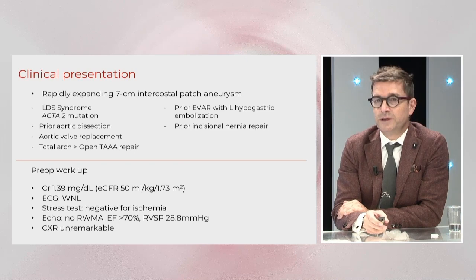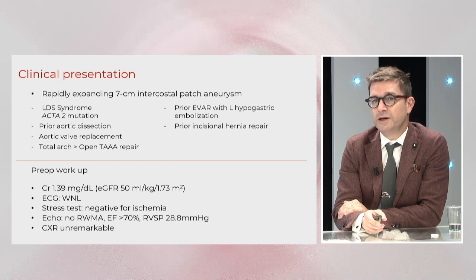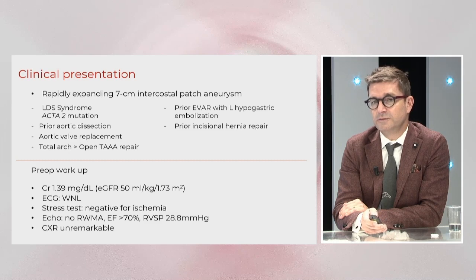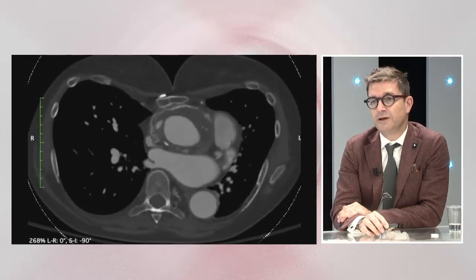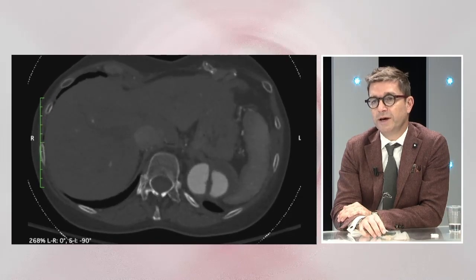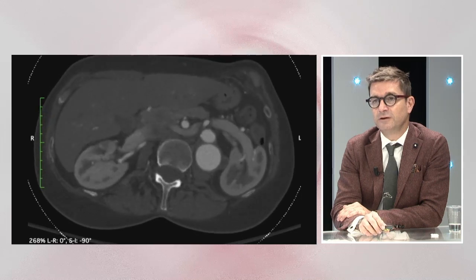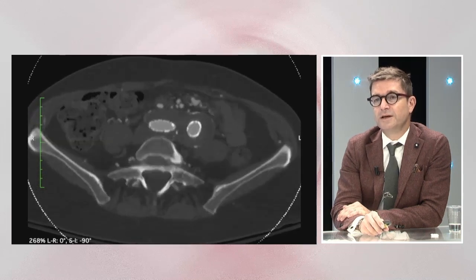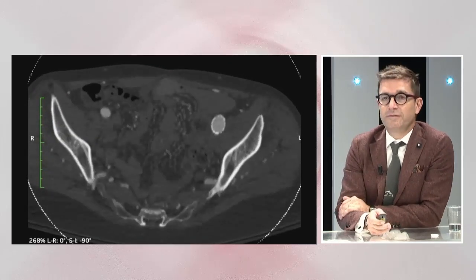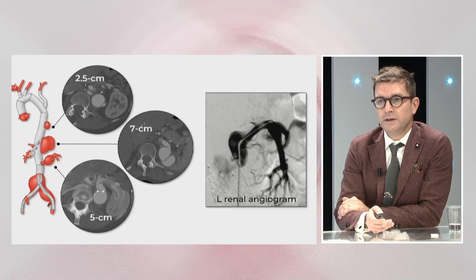I'm going to present a case of a 45-year-old female with Loeys-Dietz syndrome and multiple previous aortic repairs. I'm very thankful to Guilherme Baungard, an outstanding postgraduate research fellow who did all the hard work to prepare the video. This patient has a rapidly expanding intercostal patch aneurysm, with previous aortic surgeries extending all the way from the aortic valve to the iliac arteries, normal renal function, and a good cardiovascular evaluation.